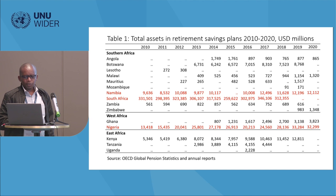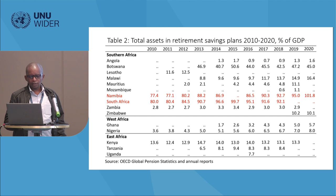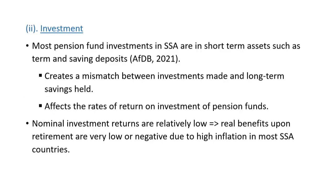The table shows retirement savings in terms of USD millions — high investment is in South Africa, Namibia, and Nigeria. In terms of total savings as a percentage of GDP, South Africa has a ratio above 80%, followed by Namibia; others have a very low proportion, showing room for expansion. Most funds invest in short-term assets, creating a mismatch since pensions are basically long-term savings, and this affects the returns. If nominal returns are low, real returns are even lower given the high inflation rates in sub-Saharan countries. Malawi has the highest nominal return averaging about 26%, followed by Zambia and Nigeria.